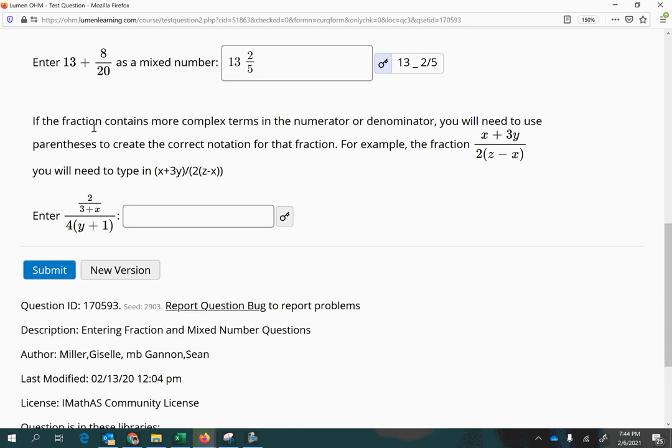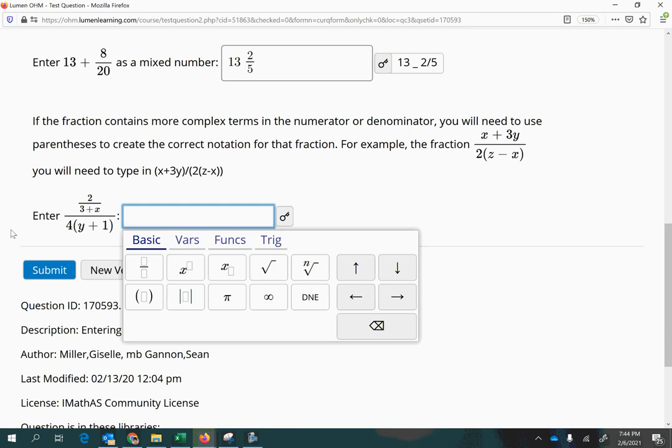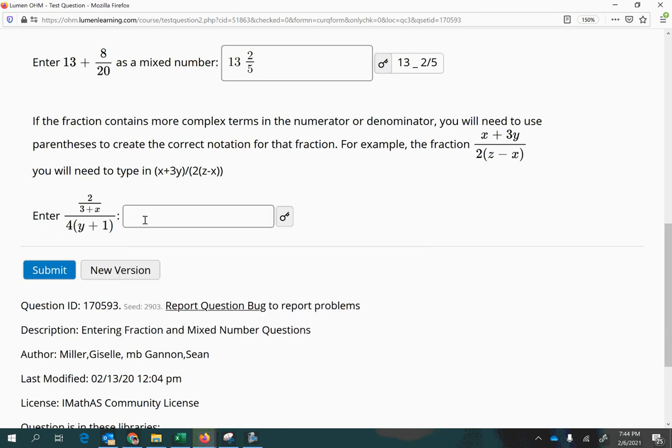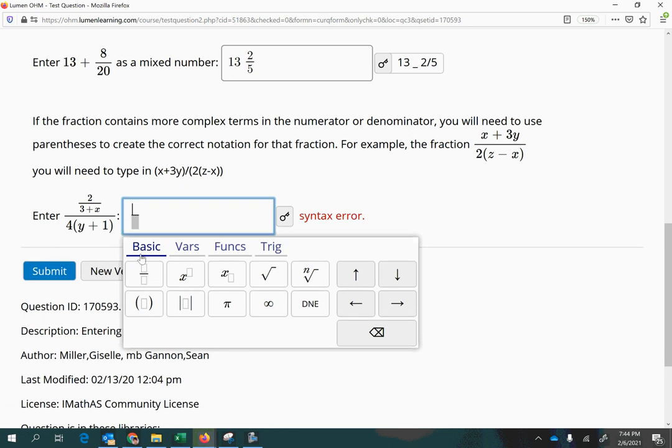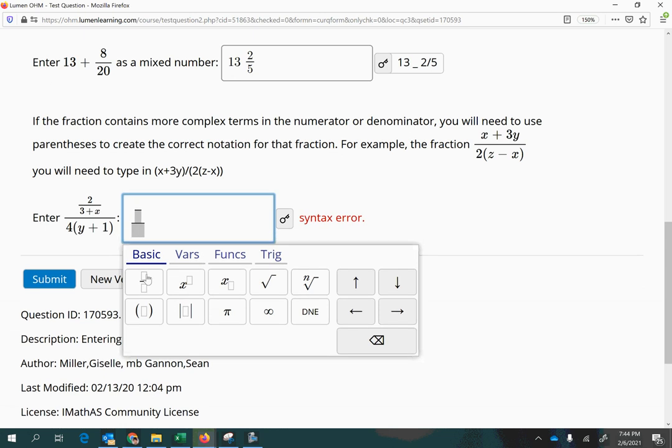All right, then we have this fraction that contains complex terms with variables and all of that. So here, we've been told to enter this, and it's got a fraction and a fraction. So I'm going to start with a fraction bar, and then once I'm in the top of the fraction, I'm going to make another fraction bar, and that's 2 in the top, then 3 plus x.